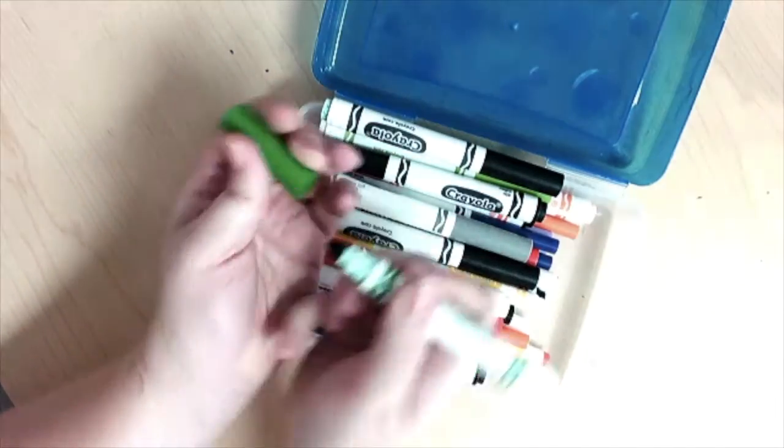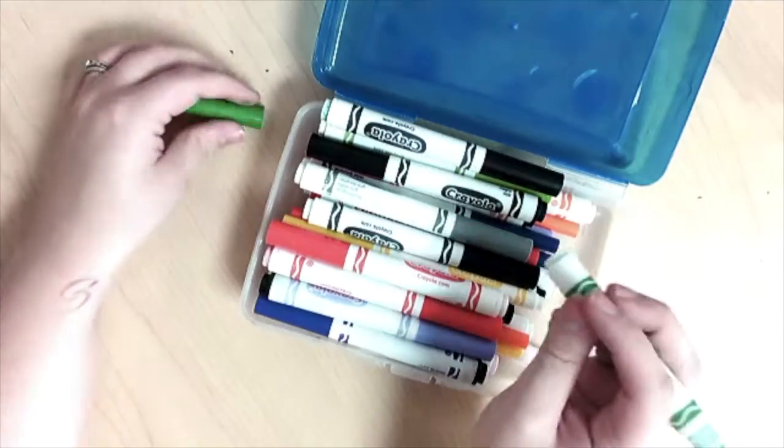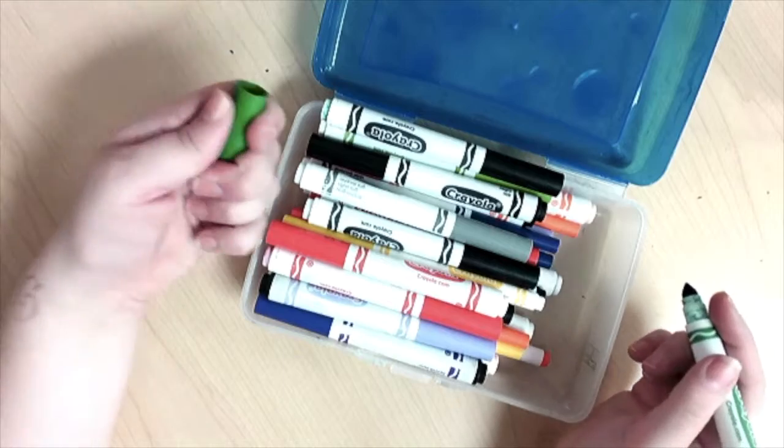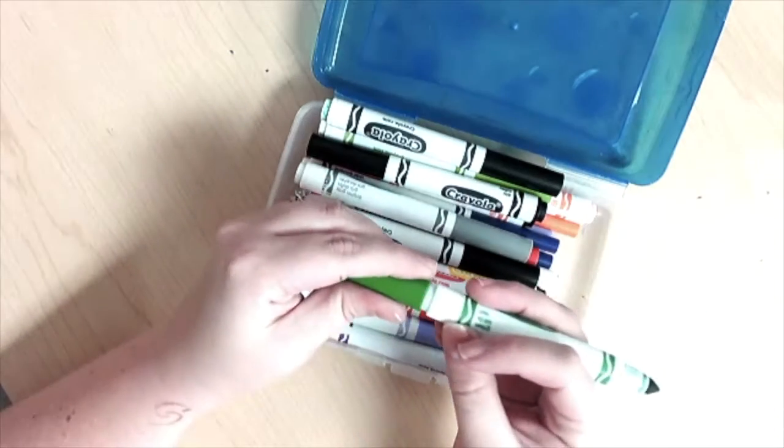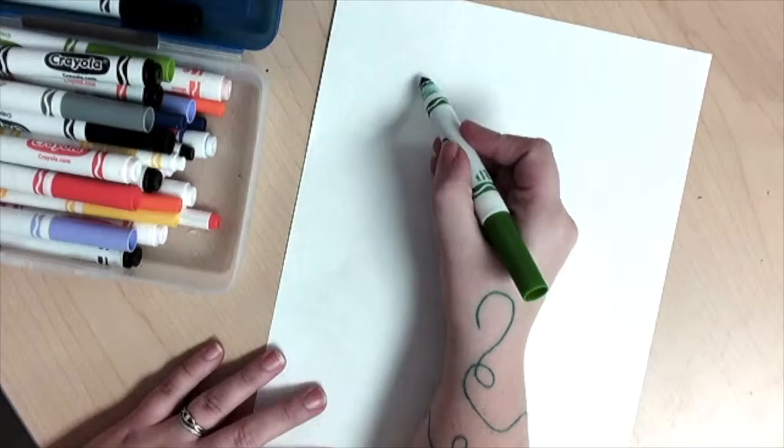Take off the lid and place it on the back end so that it doesn't roll away. If you leave it on the table or keep it in your hand, you might drop it or it could roll away. So keep it snapped on the back, and then you can begin coloring.